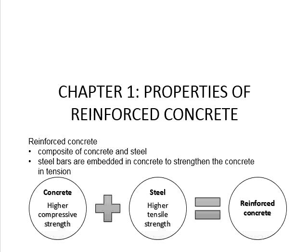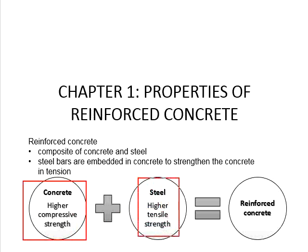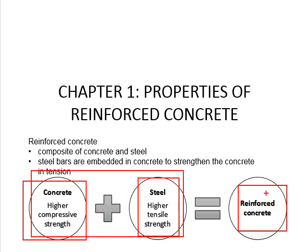Chapter 1: Properties of Reinforced Concrete. Reinforced concrete is a composite made of concrete and steel. The steel bars are embedded in concrete in order to strengthen the concrete in tension. Concrete is high in compressive strength while steel is high in tension. Combining these two materials, it forms a Reinforced Concrete.